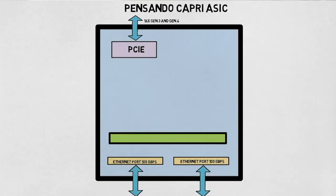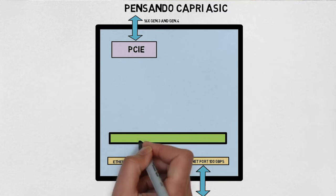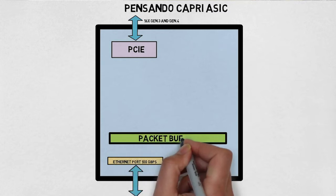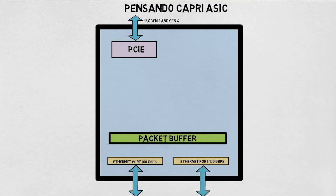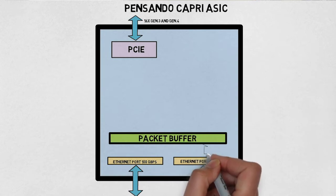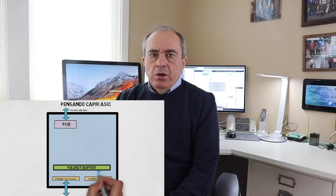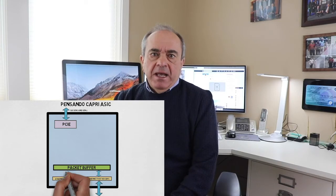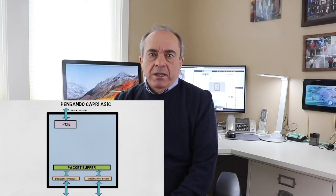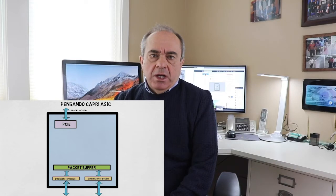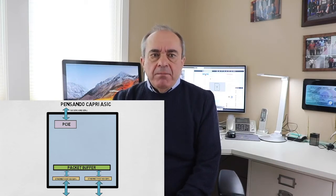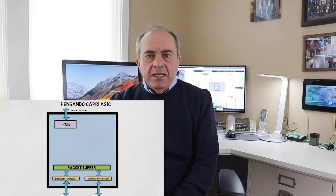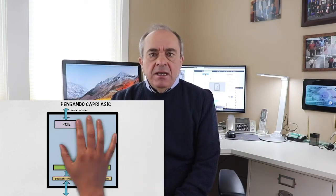Going back to the Ethernet port, they are connected to a packet buffer that also contains the traffic manager. The concept of a packet buffer is well known in any network device and is the place where packets are stored while waiting to be processed, and where processing is also scheduled and prioritized.